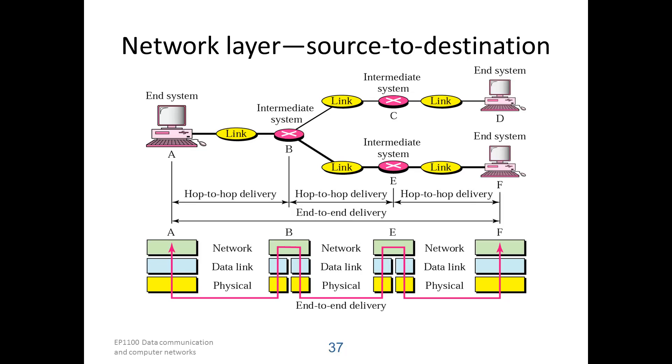B will look at address information with the data, and determine that the data should be forwarded to node E. E will receive the frame, look at the address, and determine that the frame should be forwarded to F. This function of providing delivery from source to destination is called routing.